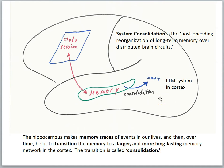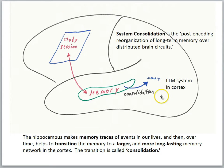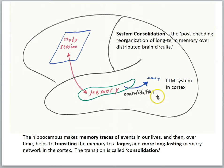In previous lessons we also learned about why the brain goes through this consolidation process. For now, we'll just say the cortex is a larger memory store — the hard drive — where we can store lots of information. Consolidation is the process of making a hippocampal-dependent memory into a hippocampal-independent memory, one where the cortex takes a more prominent role in retrieving the information.